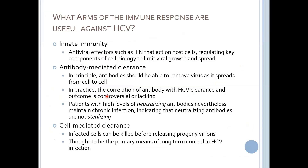What arms of the immune response are useful against HCV? It's going to be the big three that we've been talking about for intracellular pathogens: innate immunity, antiviral effectors such as type 1 interferon that act on host cells, and cell-mediated immunity. Here again, we really want interferon to work because we're trying to limit the spread of this virus throughout the organ.